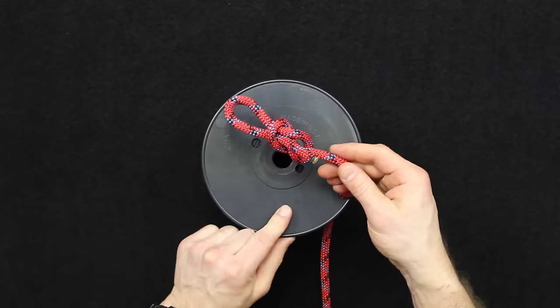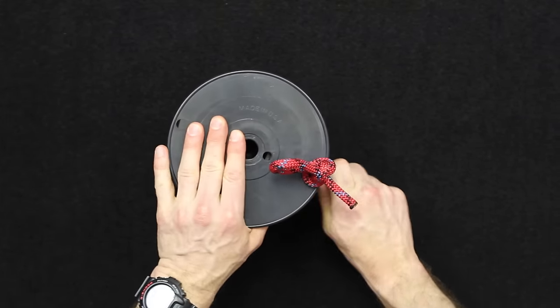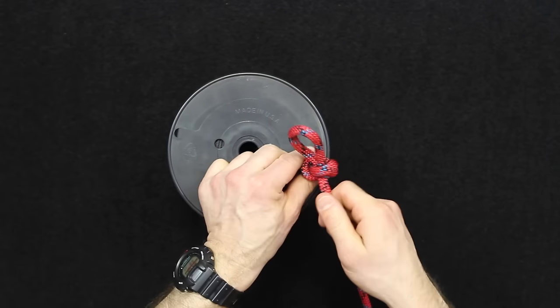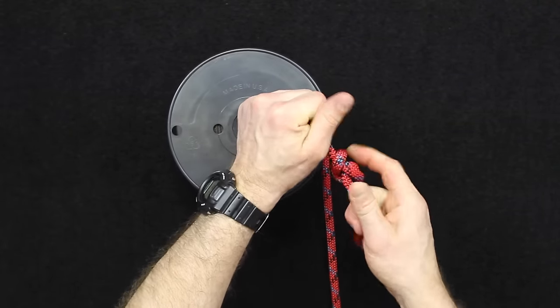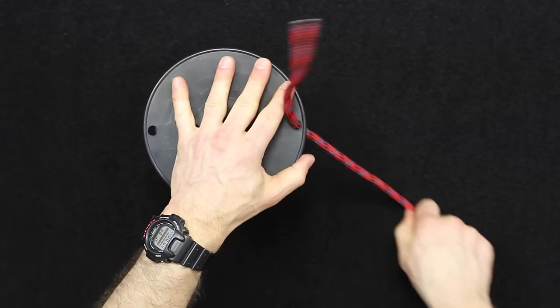that is now a slipped figure eight. Same principle—it locks through and will not pull. But now if it's under load, you can just pop this out just like that and release the rope.